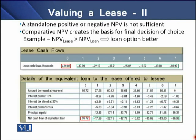A standalone positive or negative NPV is not sufficient. We have to use certain other criteria along with the resulting NPV. For that purpose, we use comparative NPV amounts as the basis for a final decision. We need to determine the NPV under a lease contract and the NPV under a loan contract, then compare them. If the NPV under the lease contract is better than the NPV under the loan contract, then the loan option may seem better.